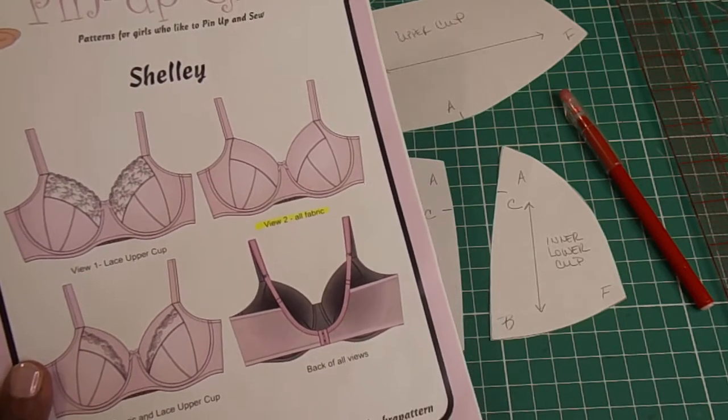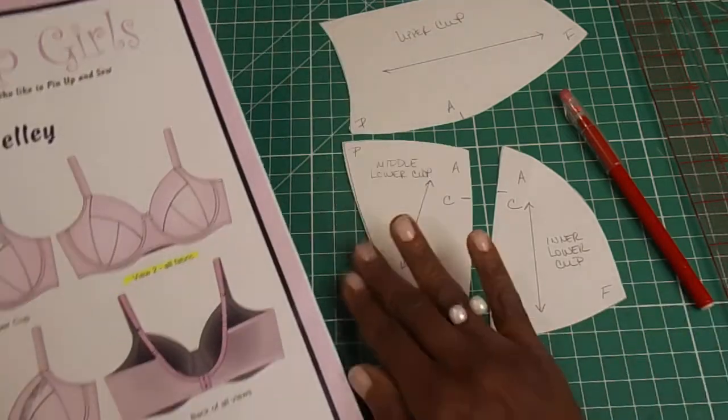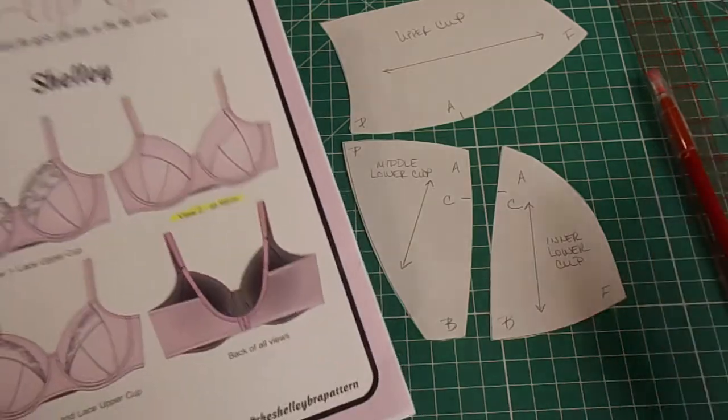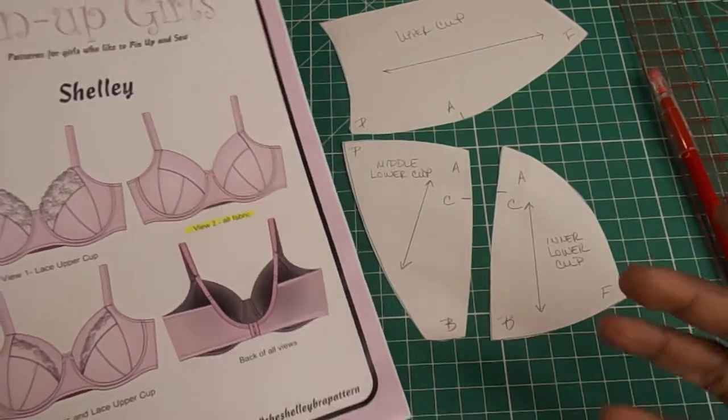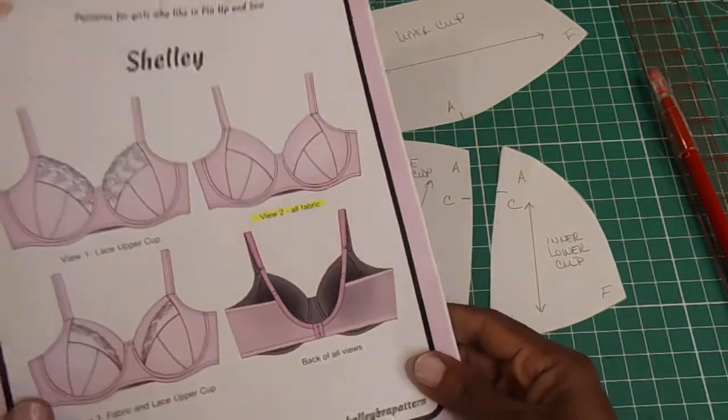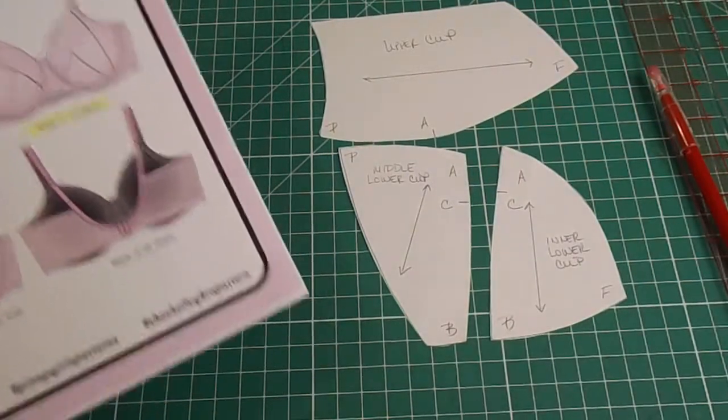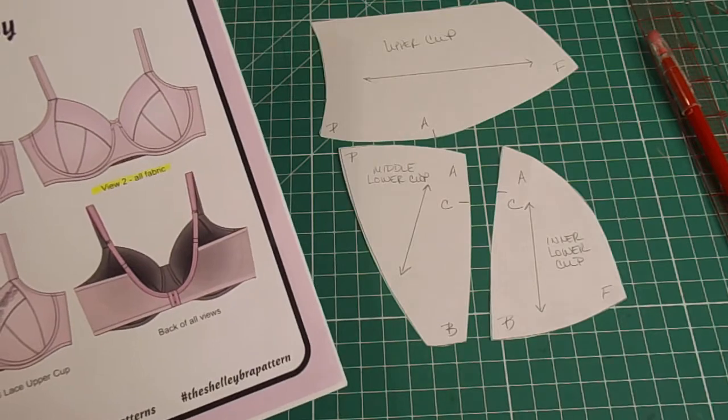Let's make an adjustment to the cup of the Shelly bra. We hear a lot that the bra cup can be too pointy once it's done and fitted and you got the right fit, but that point just really points out a little too much for me. A little too Madonna-ish, what, 1988 maybe? So let's take a look at how we're going to make the adjustment.